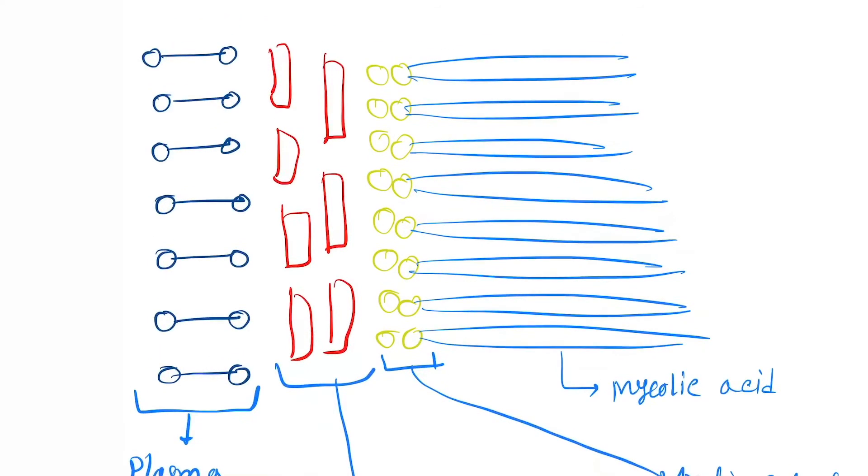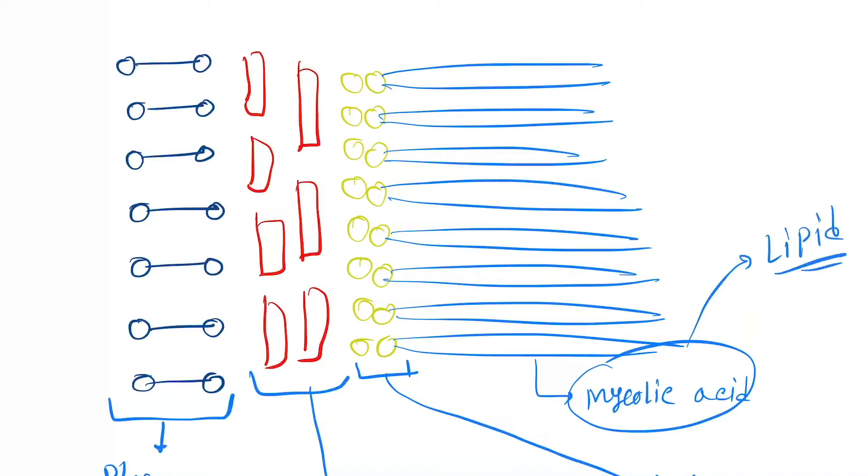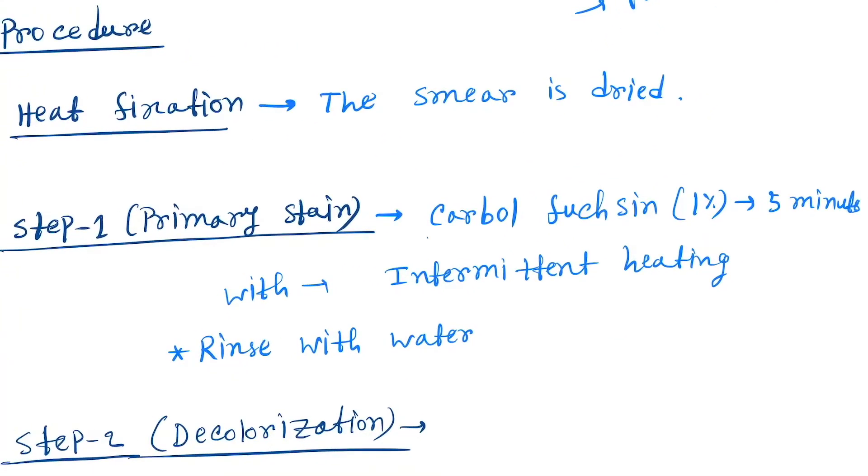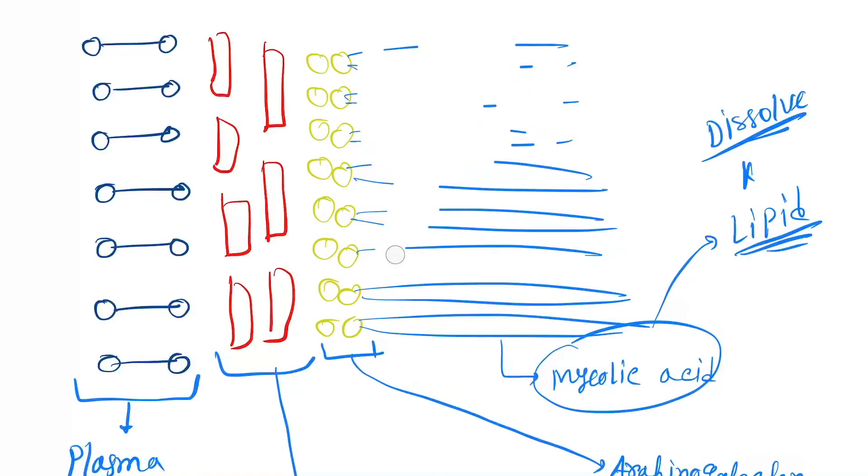Now the mechanism. In Mycobacterium tuberculosis and other acid-fast bacteria, there is mycolic acid present, which is a lipid. After adding carbol fuchsin with intermittent heating, the heating causes this lipid to dissolve. As a result, this layer will be absent, making it easy for carbol fuchsin to go inside the cytoplasm because the layer is now gone.